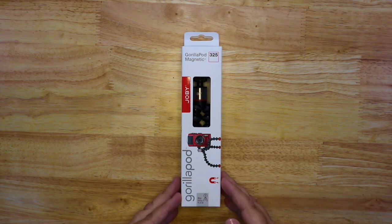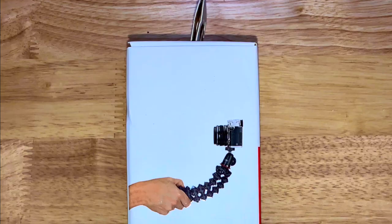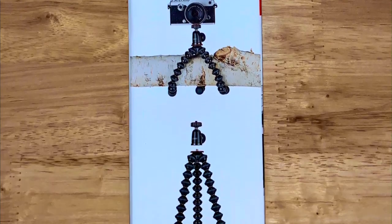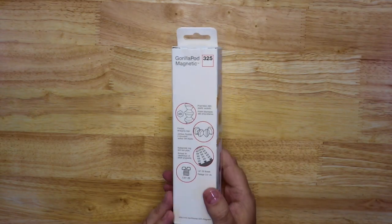Hello again. Today we're going to have a look at the Joby Gorillapod 325. This is the magnetic Gorillapod again, but unlike the Mini, this one's got nice long legs so you can wrap them around things if you need to.